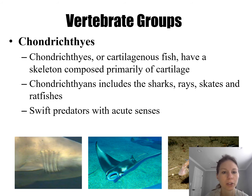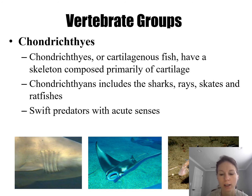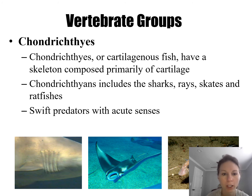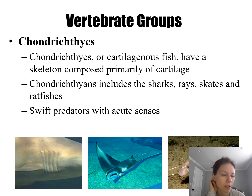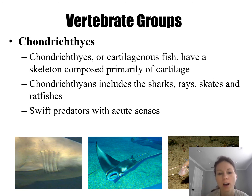The first group of gnathostomes are cartilaginous fish, or chondroichthyans. Chondroichthyans include sharks, rays, skates, and ratfishes — they are all predatory. They all have a skeleton made of cartilage, though it's harder than the cartilage in your ear or nose.